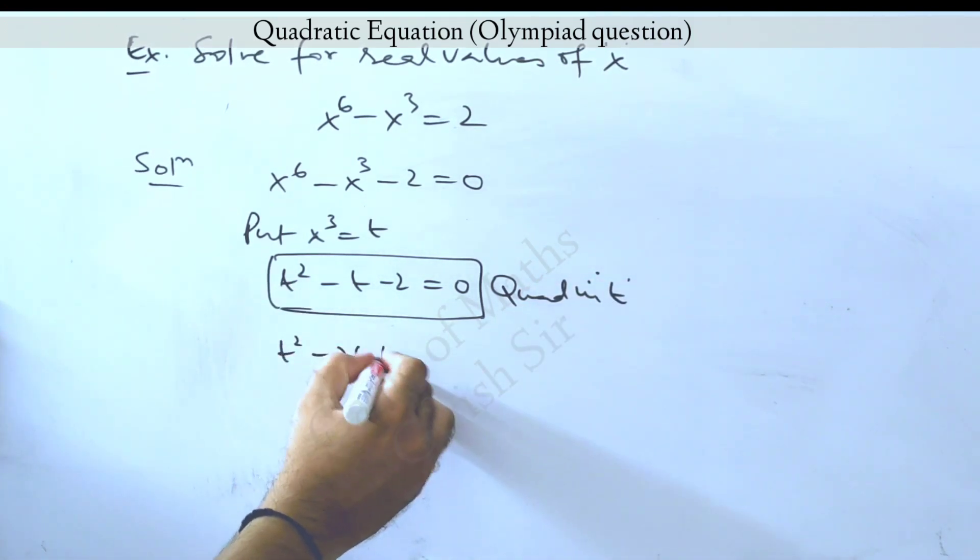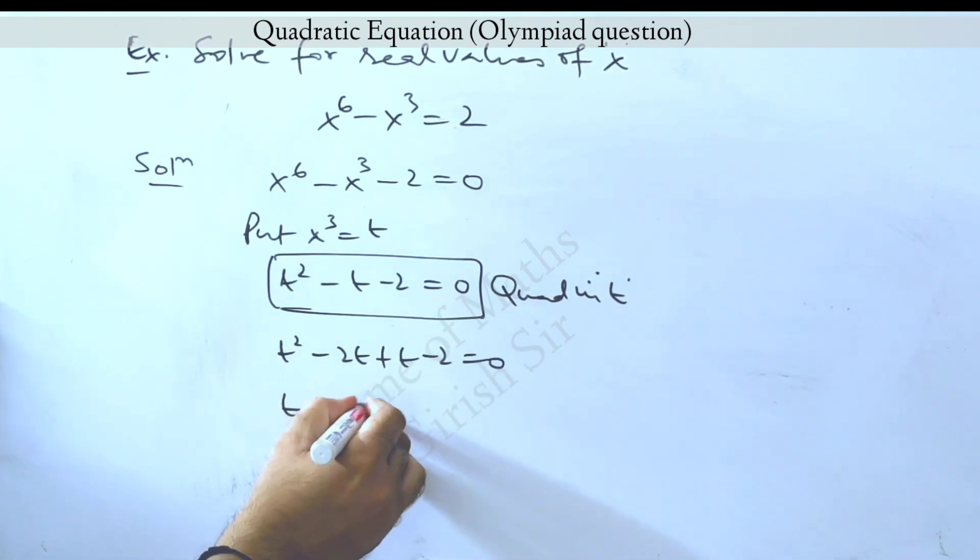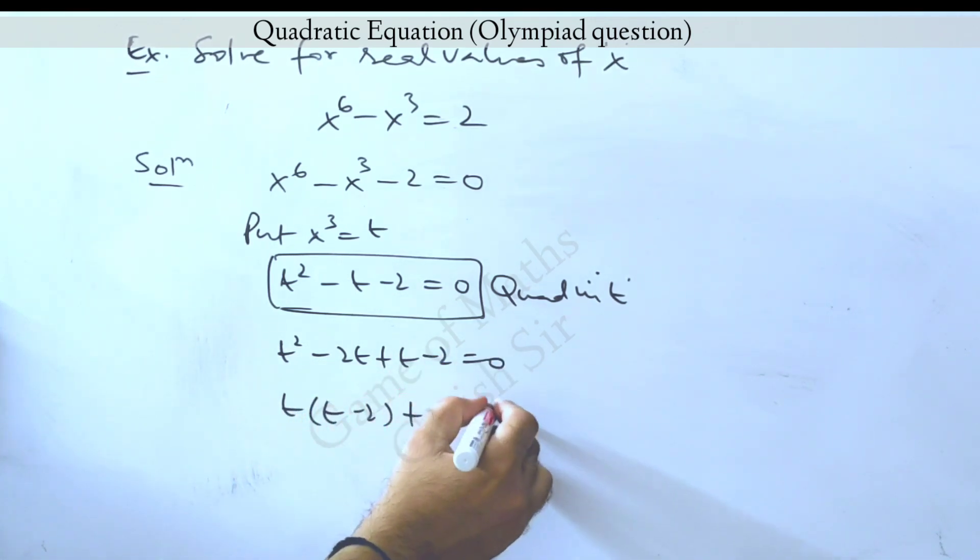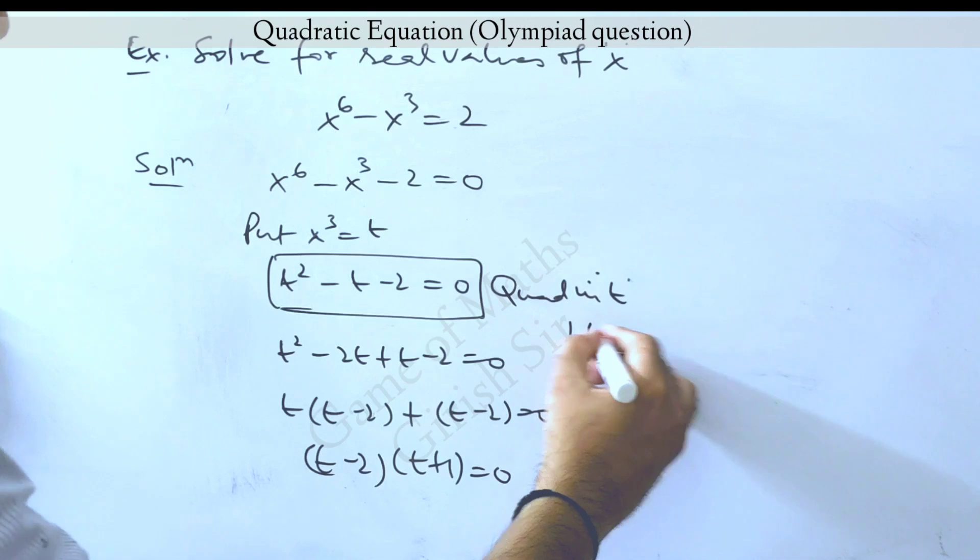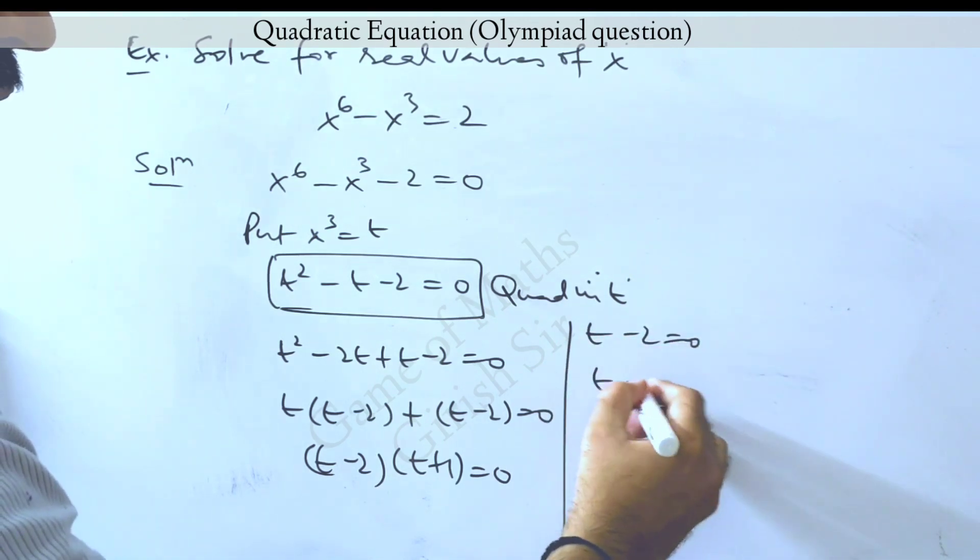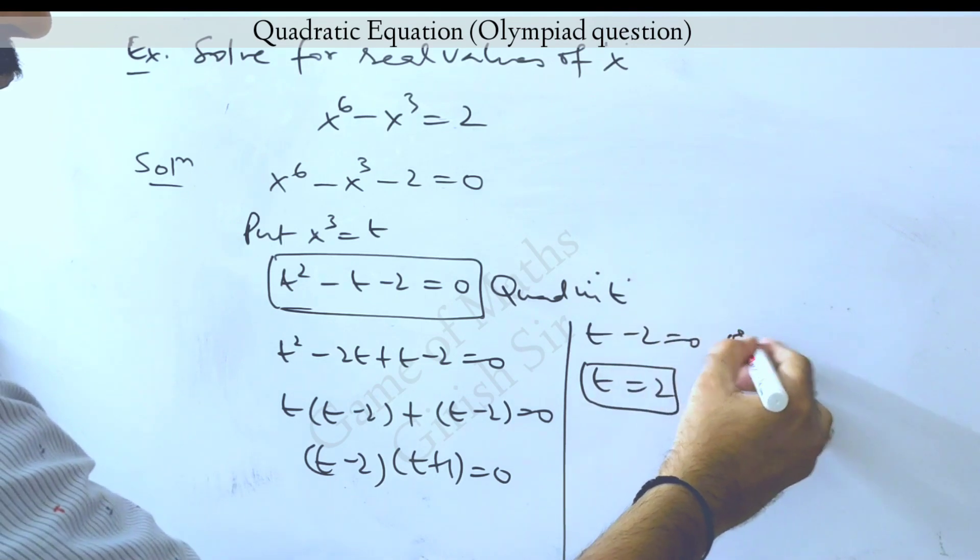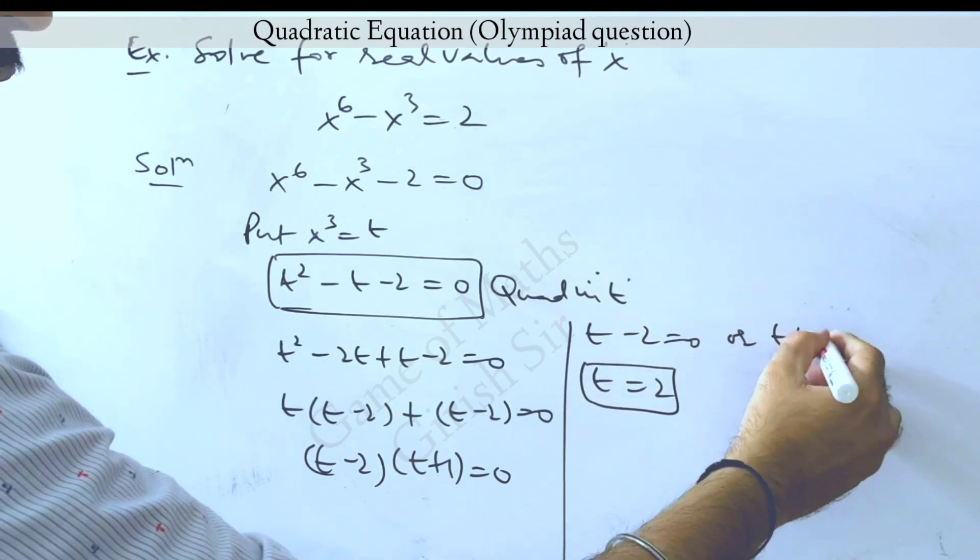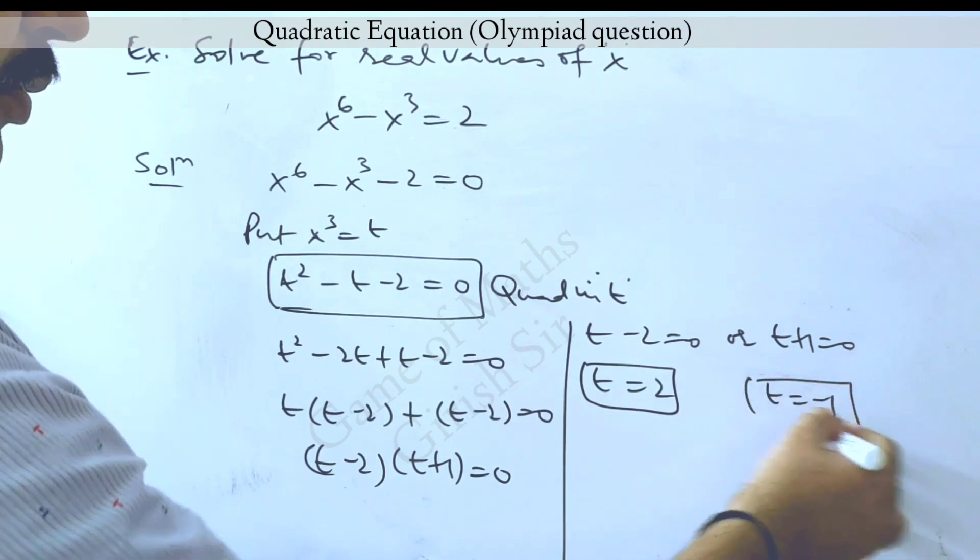If we split the middle term and take t common out of the first term, this is what we get, which implies either t minus 2 equals 0, giving a possible value of t as 2, or t plus 1 equals 0, which gives me t equal to minus 1.